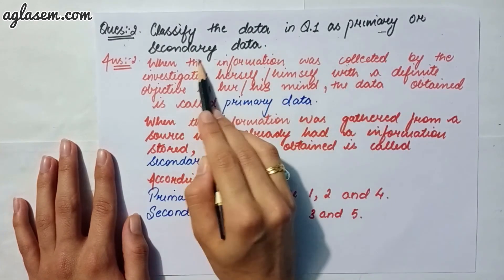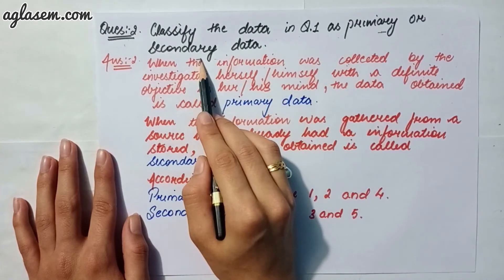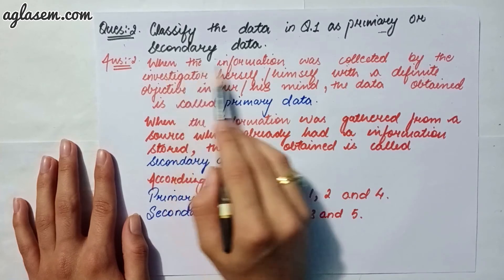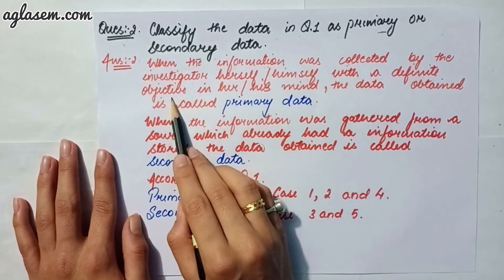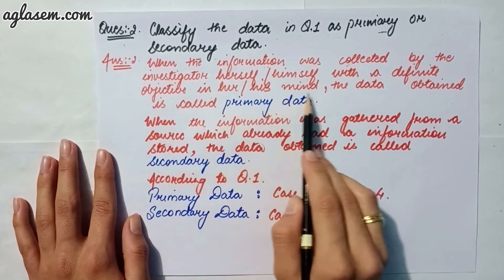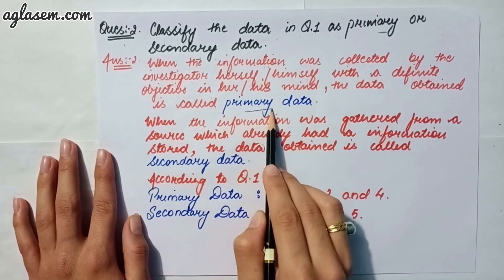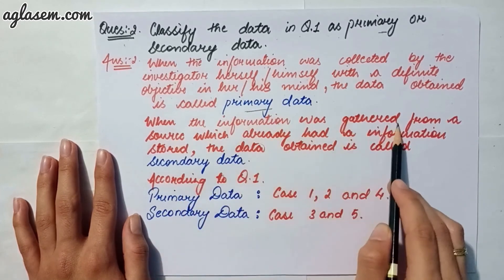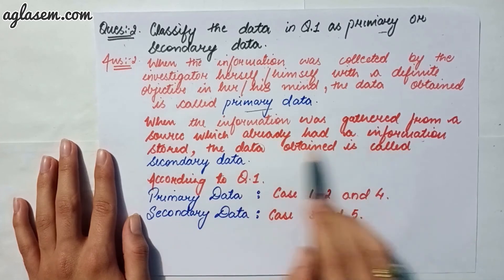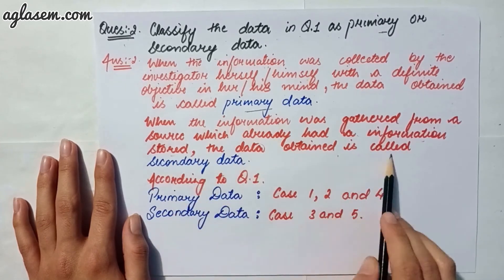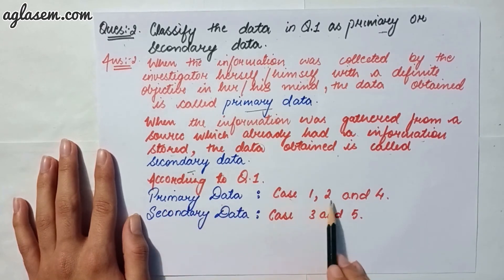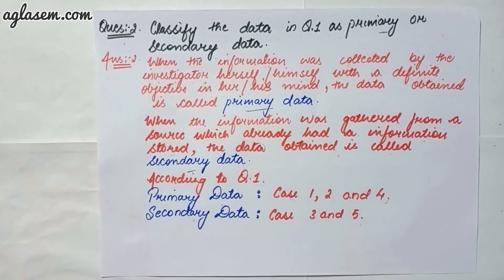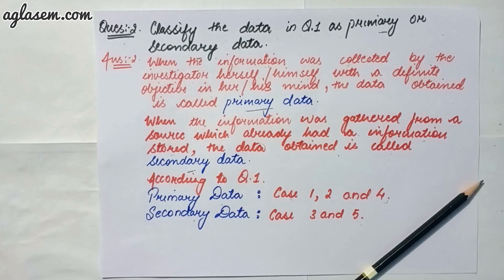Moving to question number two: classify the data in question one as primary or secondary data. Primary data is when the information was collected by the investigator himself or herself with a definite objective in mind. When the information was gathered from a source which already had information stored, it is called secondary data. So primary data applies to cases one, two, and four, and secondary data applies to cases three and five.